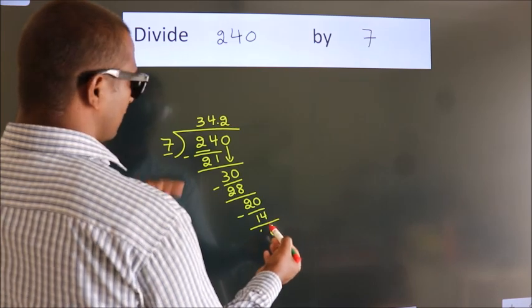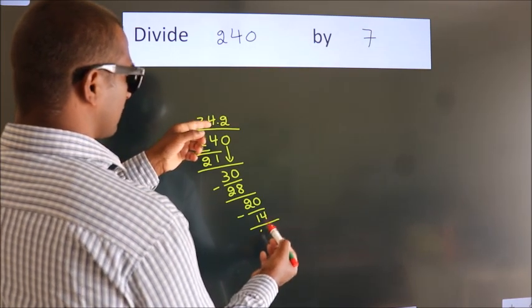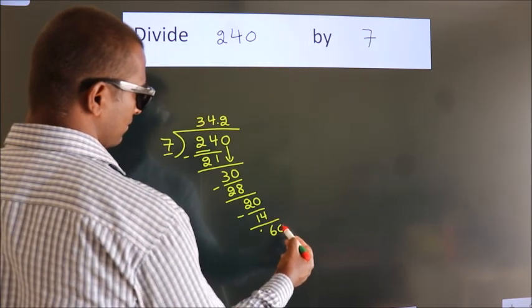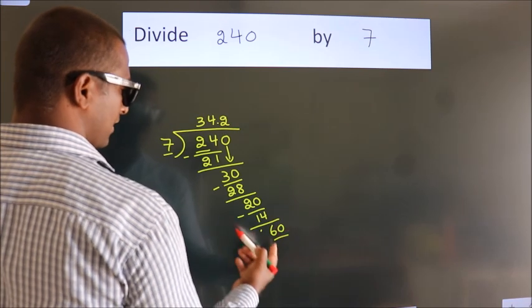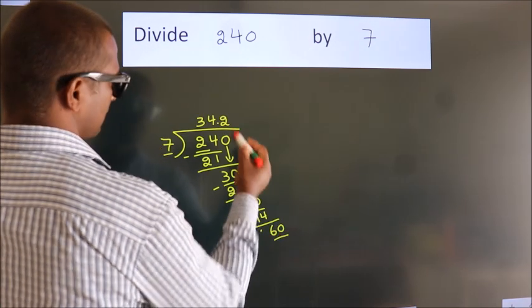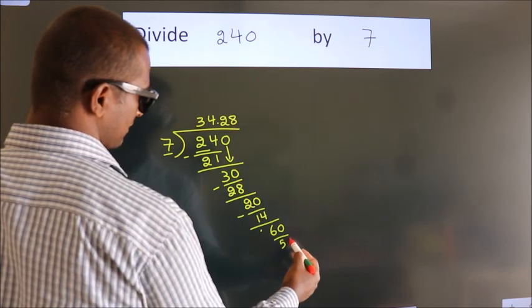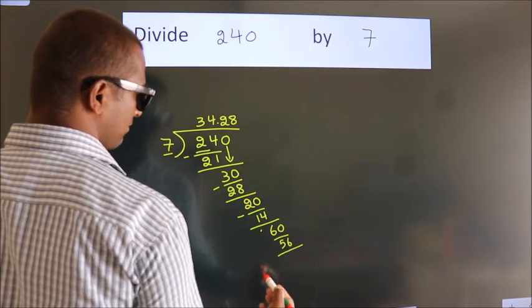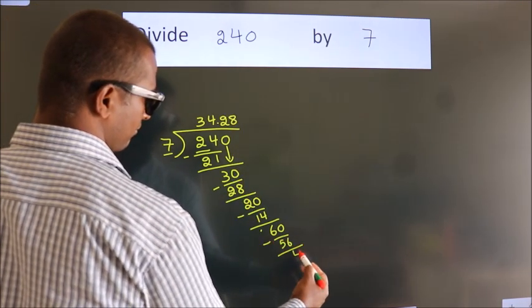After this, we already have the decimal. So directly take 0. So 60. A number close to 60 in the 7 table is 7 times 8, which is 56. Now we subtract. We get 4.